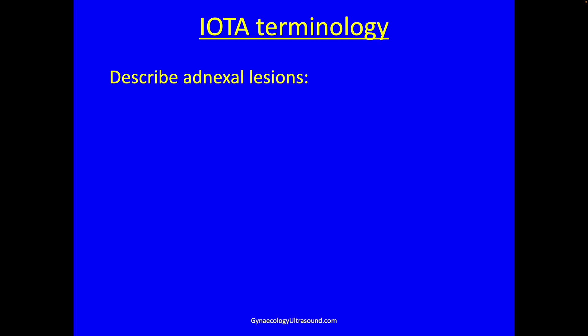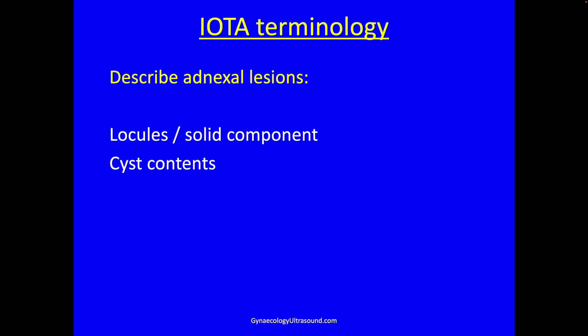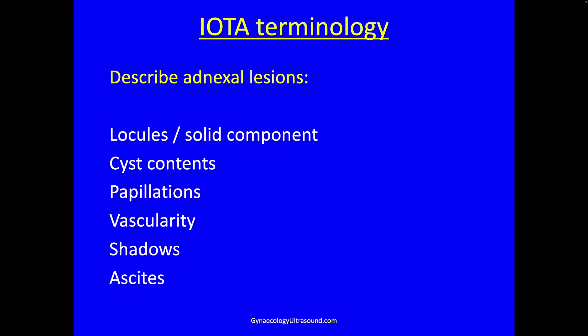Using the terminology we will describe an adnexal lesion as to how many locules there are and if there's a solid component, what the cyst contents look like, whether there are any papillations, what the vascularity is like, and whether there's shadowing and ascites.